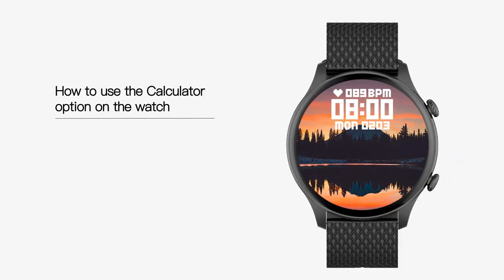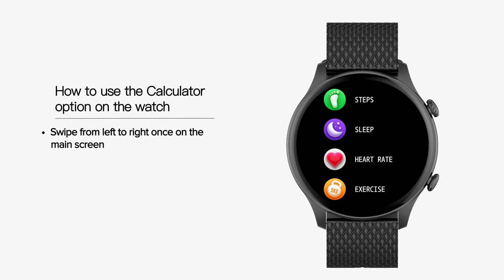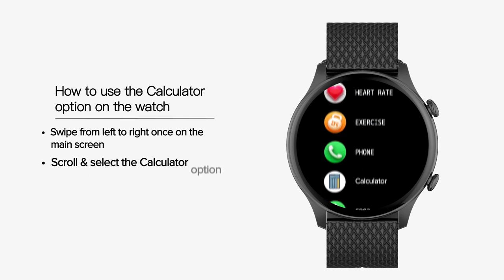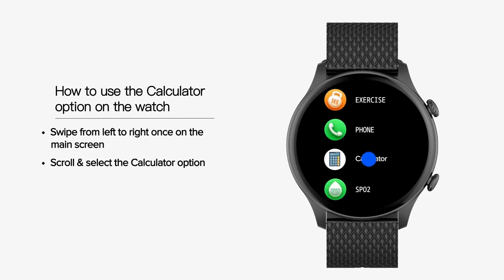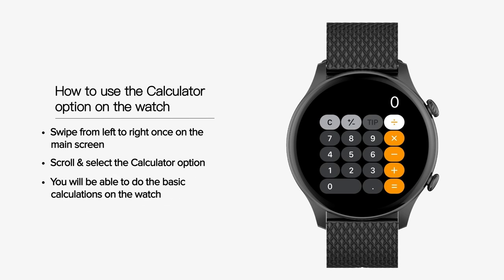How to use the calculator option on the watch. Swipe from left to right once on the main screen. Scroll and select the calculator option. You will be able to do the basic calculations on the watch.